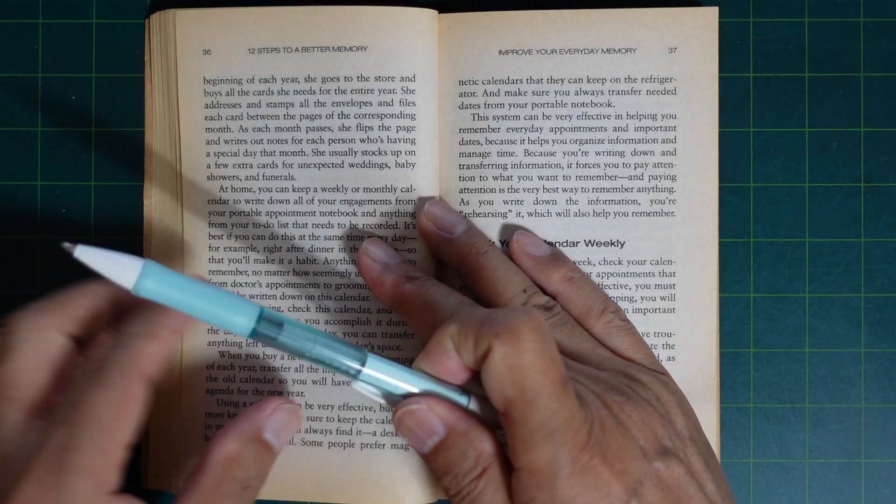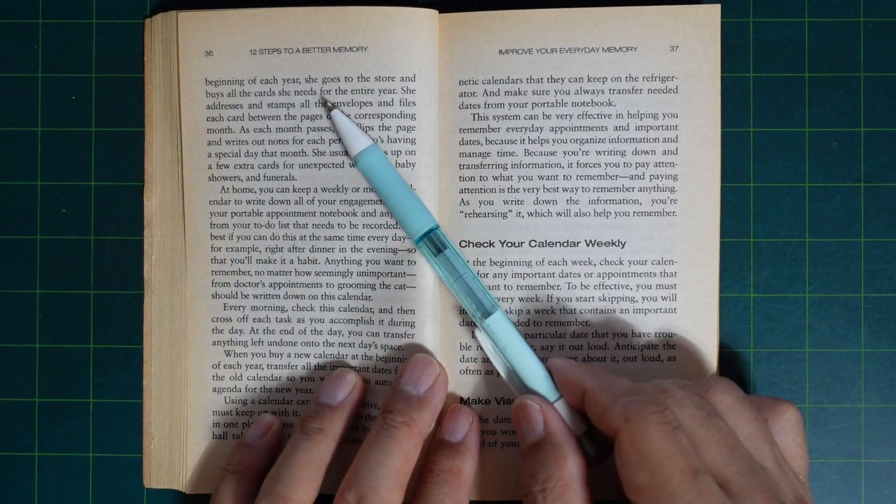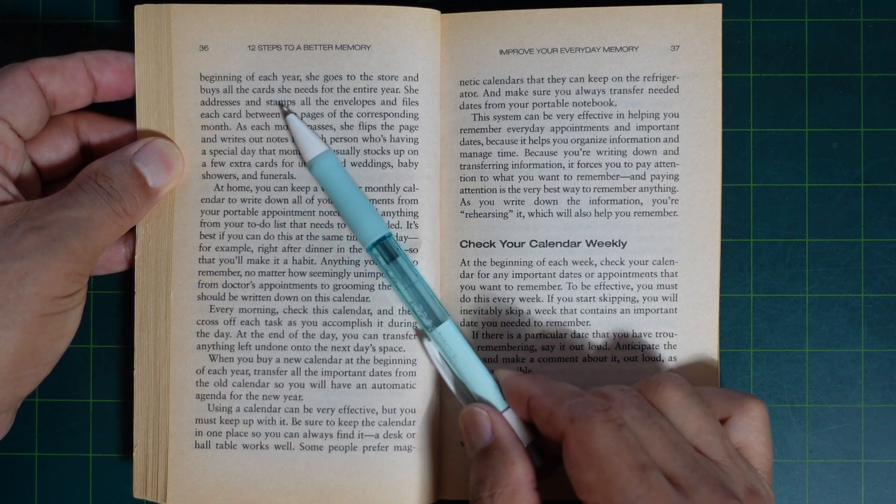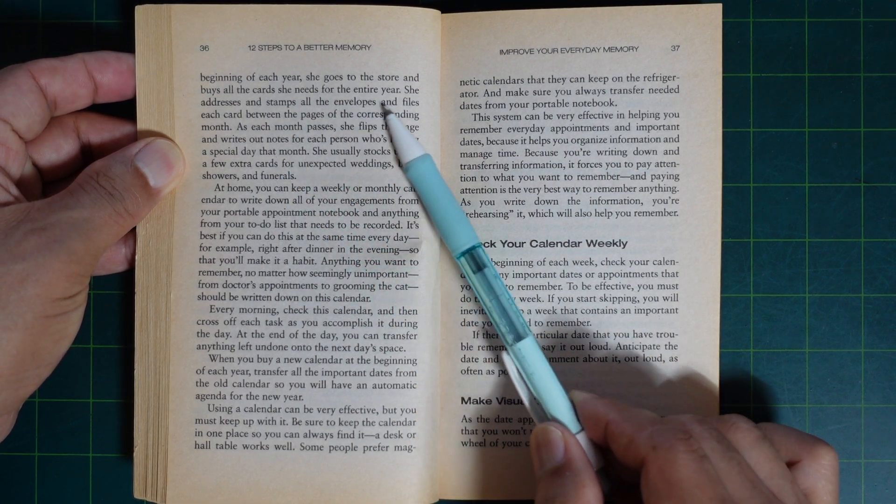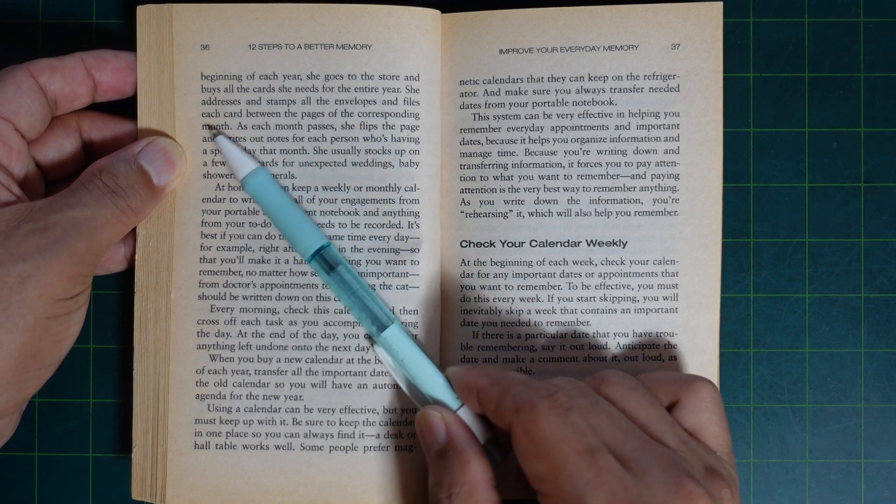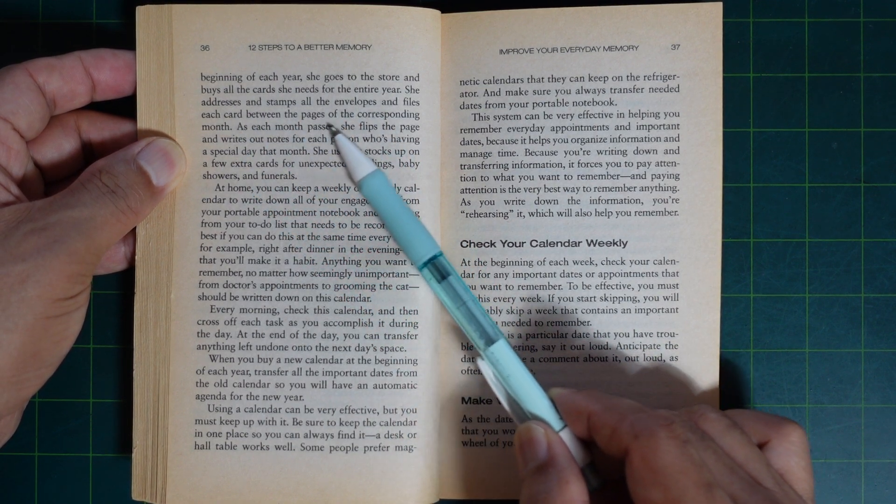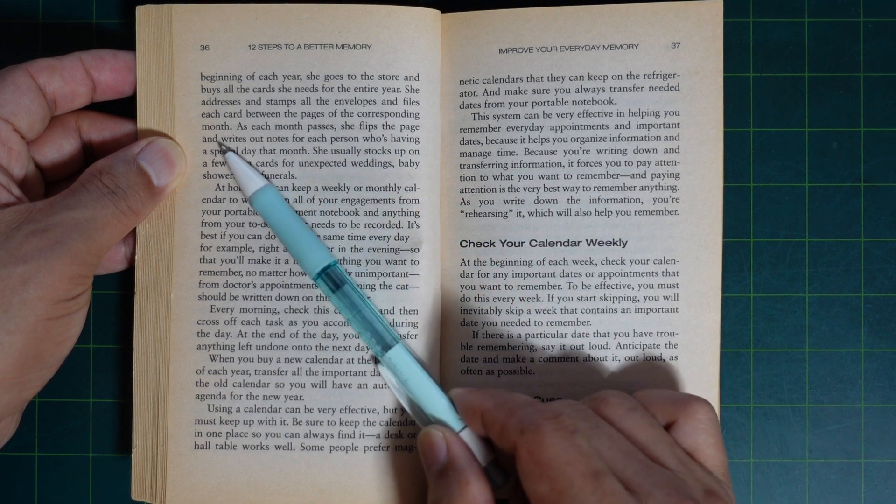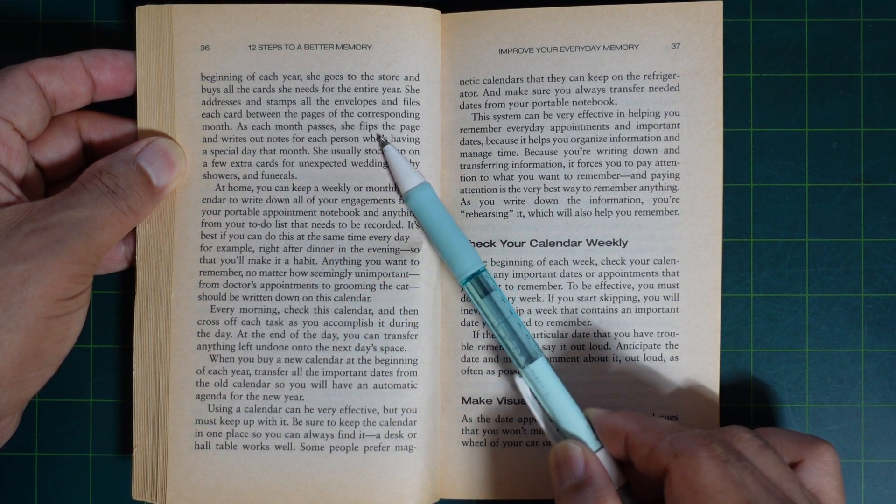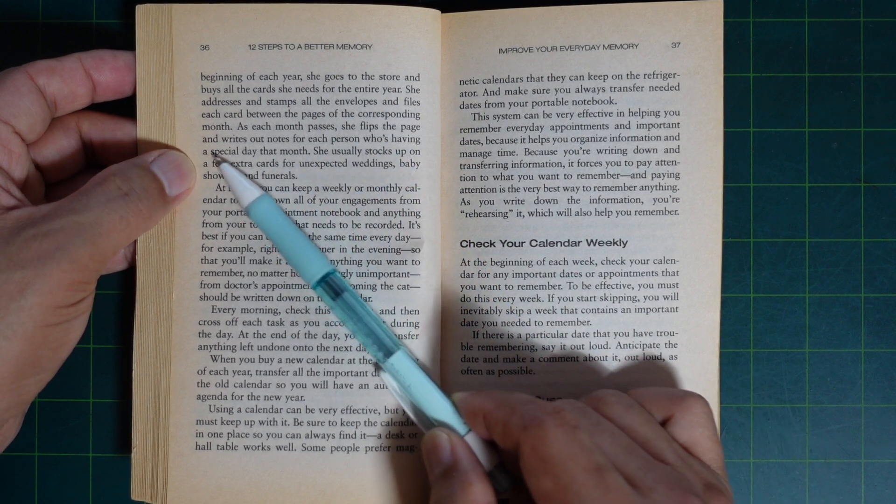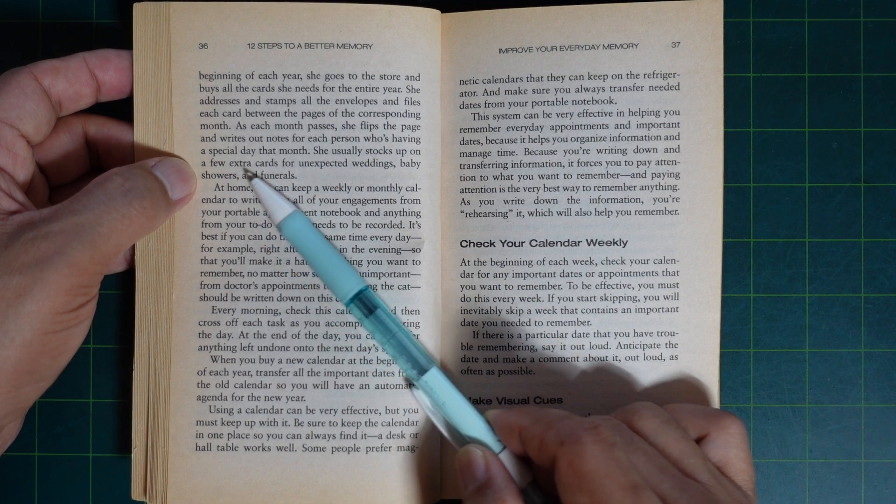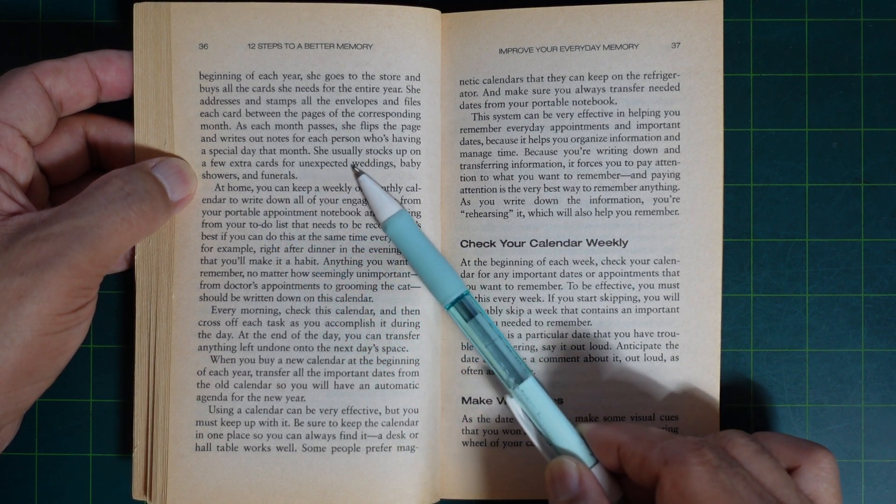At the beginning of each year, she goes to the store and buys all the cards she needs for the entire year. She addresses them, stamps all the envelopes and files each card between the pages of the corresponding month. As each month passes, she flips the page and writes out notes for each person who is having a special day that month.